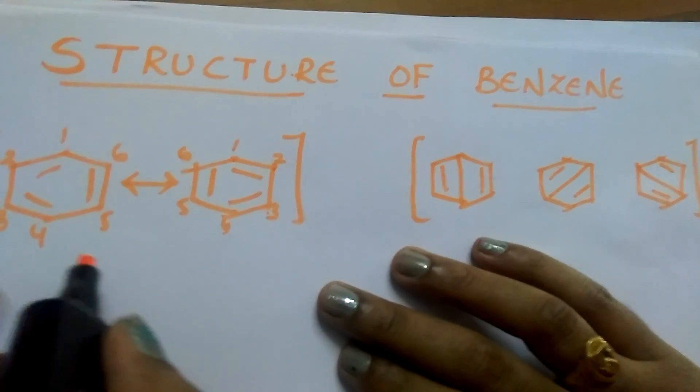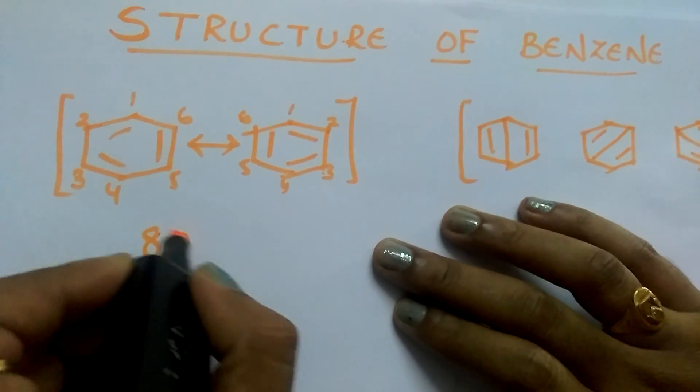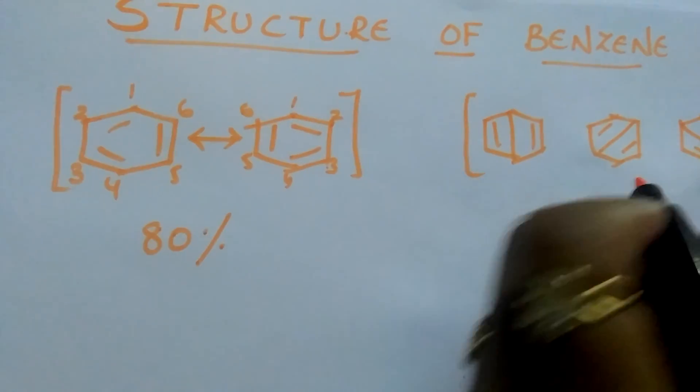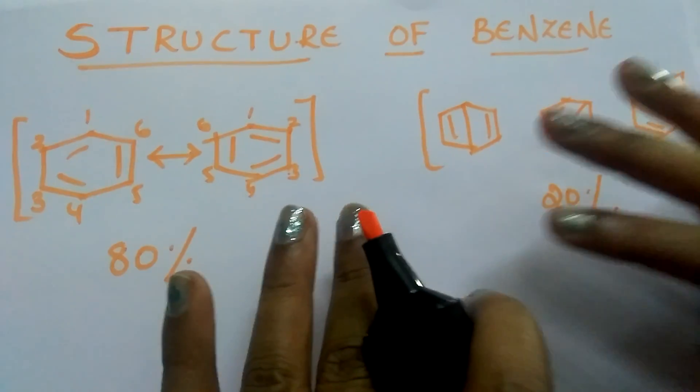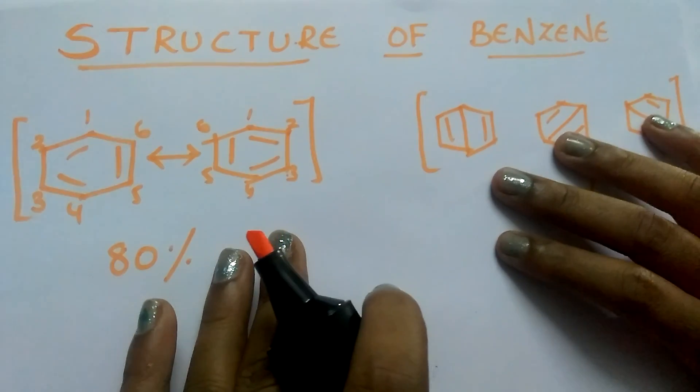But Kekule's structures contribute 80% to the real structure and Dewar structures contribute 20% to the real structure. These structures are not the real structures.